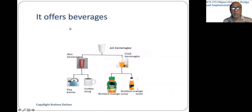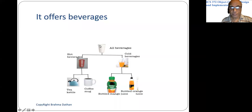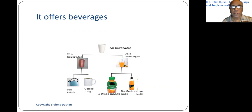To give you an idea about polymorphism and dynamic binding, imagine an analogous case in a restaurant, or a coffee shop, or a beverage shop which sells all kinds of beverages. The beverages can be hot or cold. So it serves, let's assume, coffee and tea which are hot, and two cold beverages — mango juice and orange juice. There are cups, bottles, mugs, or kettles for these things.